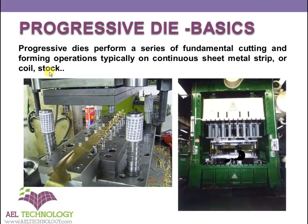What actually is a progressive die? A progressive die performs a series of fundamental cutting and forming operations, typically on a continuous sheet metal strip, coil, or stock. These operations are performed simultaneously at two or more stations during each press stroke as the strip progresses through the die to produce a part — hence the name progressive die.